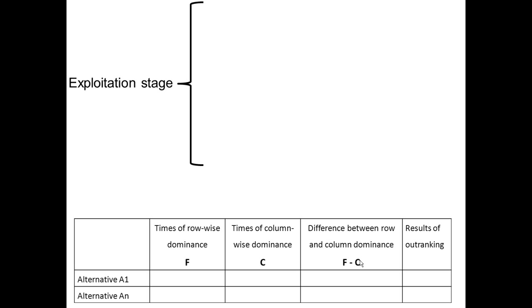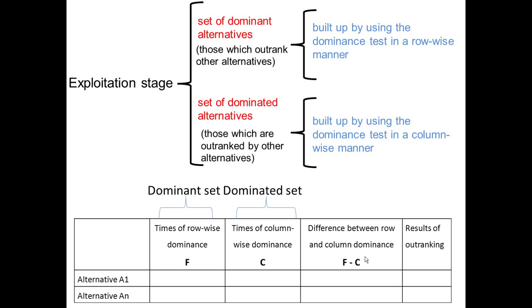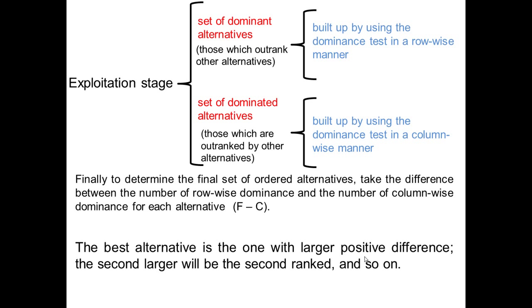During the exploitation stage of the method, two dominant sets must be determined. The first is the set of dominant alternatives, and the second is the dominated alternatives. The dominance pattern is firstly built up by using the dominant states in a row-wise manner. This gives the set of dominant alternatives—that is, those which outrank other alternatives. Then a set of dominated alternatives is obtained by using the dominant states in a column-wise manner, those which are ranked by other alternatives. Finally, to determine the final ordering of alternatives, take the difference between the number of row-wise dominances and the number of column-wise dominances for each alternative. The best alternative is the one with the larger positive difference, the second largest will be the second rank, and so on.